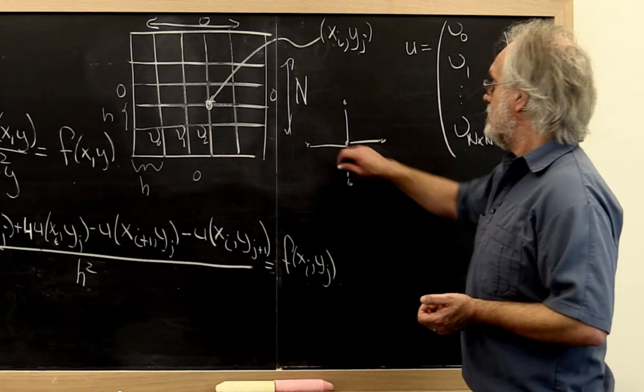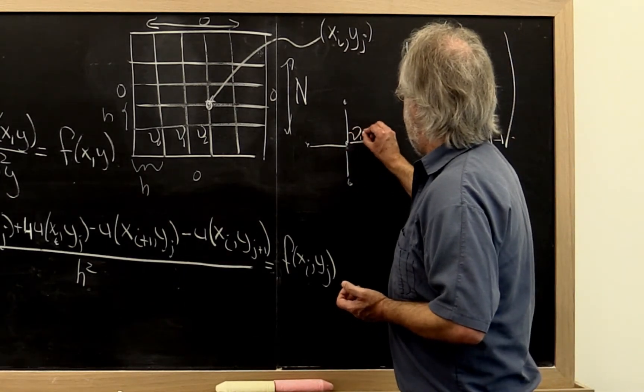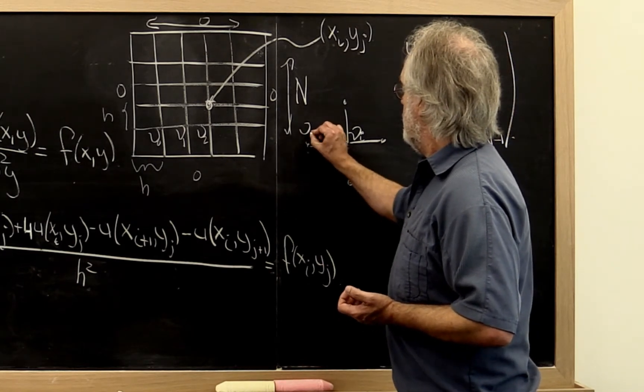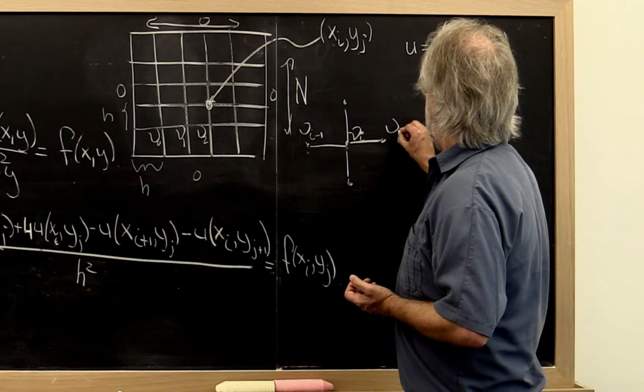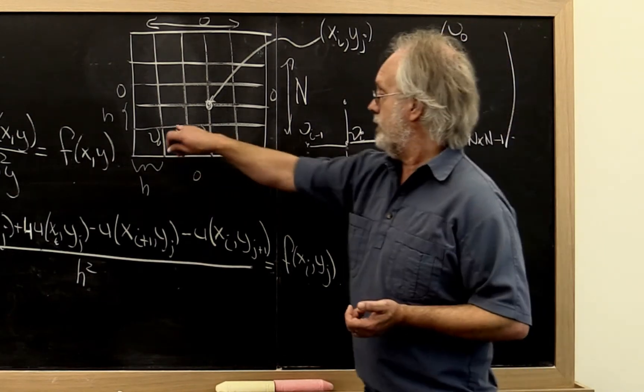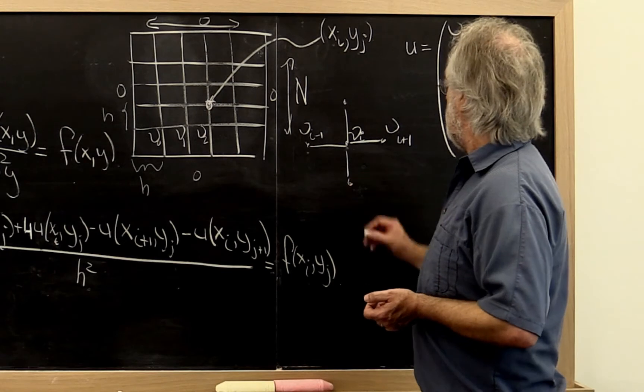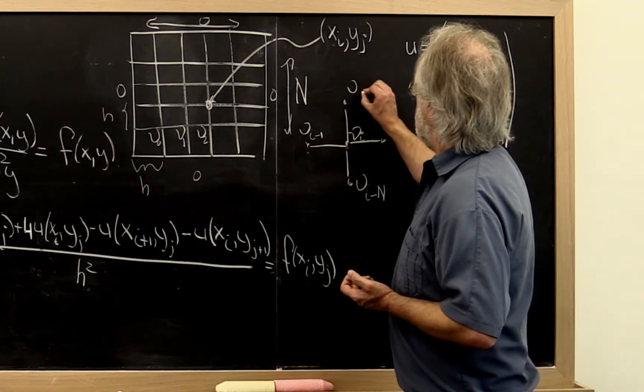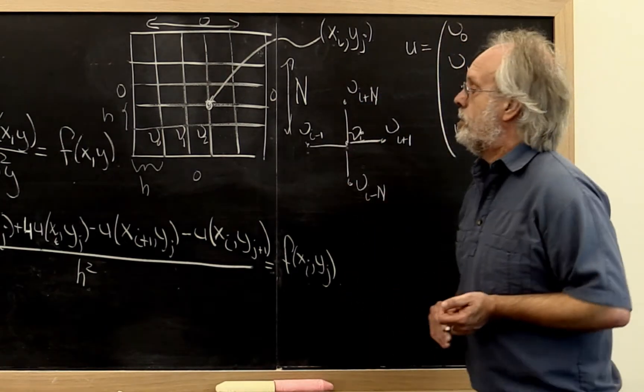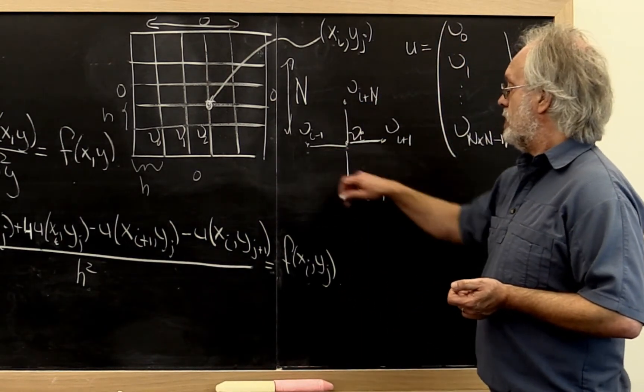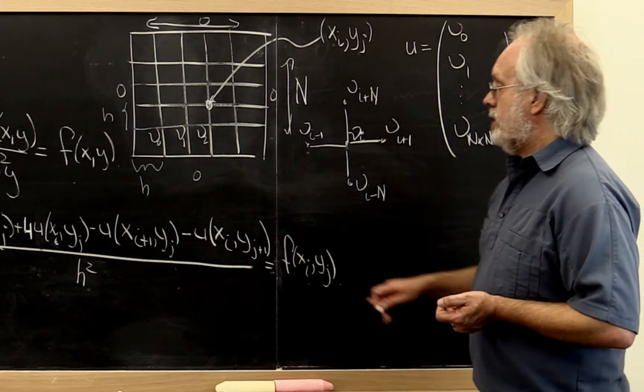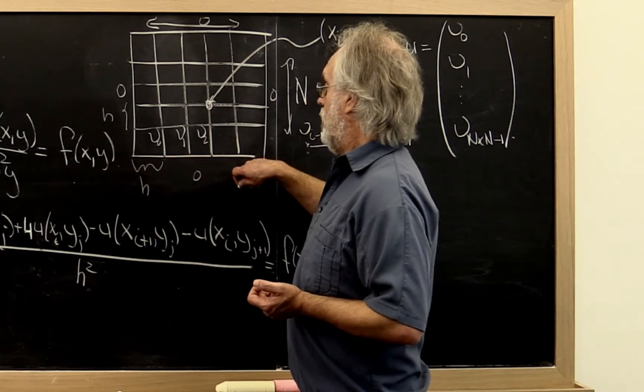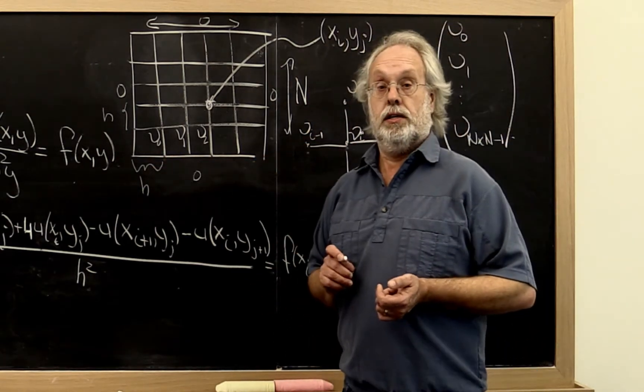So if you look at the stencil, if we're looking at epsilon i, then the points around it are to the left is epsilon i minus 1. To the right is epsilon i plus 1 because of the order in which we go. To the south is epsilon i minus capital N and epsilon i plus capital N is to the north. And again, that's known as the five-point stencil. And obviously this equation has to be adjusted when you're on the boundary because then you know that those points are equal to zero.